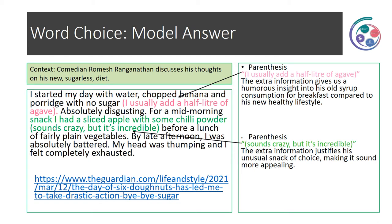Here's our model answer. Parenthesis: 'I usually add a half litre of agave.' The extra information gives us a humorous insight into his old syrup consumption for breakfast compared to his new healthy lifestyle, which suggests that he has totally changed his diet. Then we have another example of parenthesis: 'Sounds crazy, but it's incredible.' The extra information justifies his unusual snack of choice, making it sound more appealing. It's absolutely fine to write about the same technique twice if there are two individual examples of it — they are both doing different things.